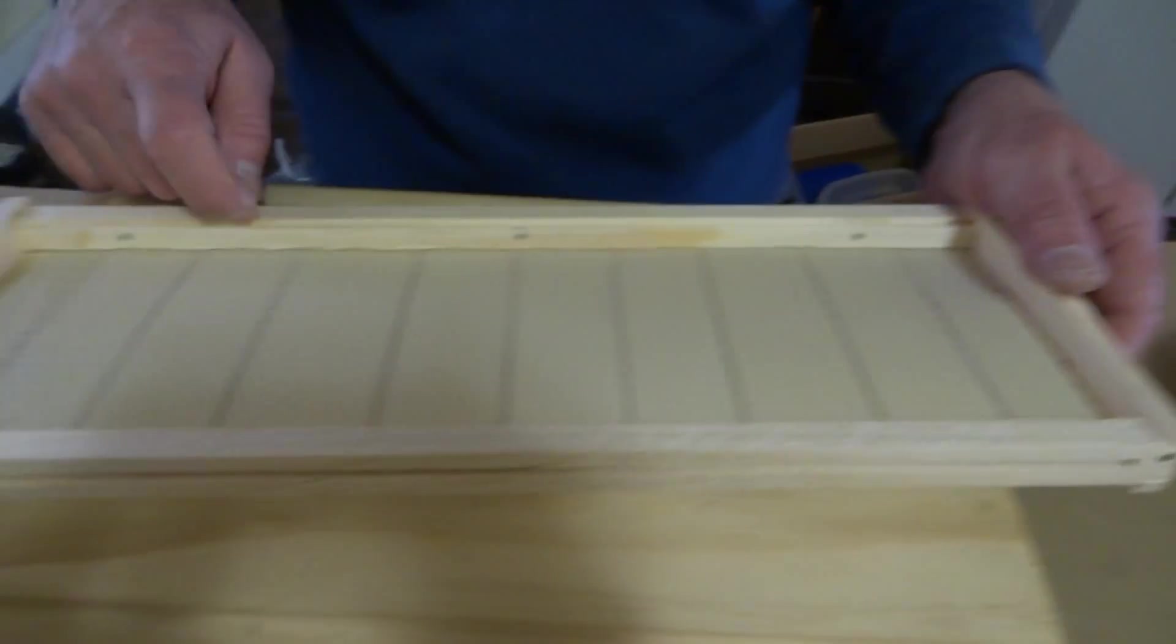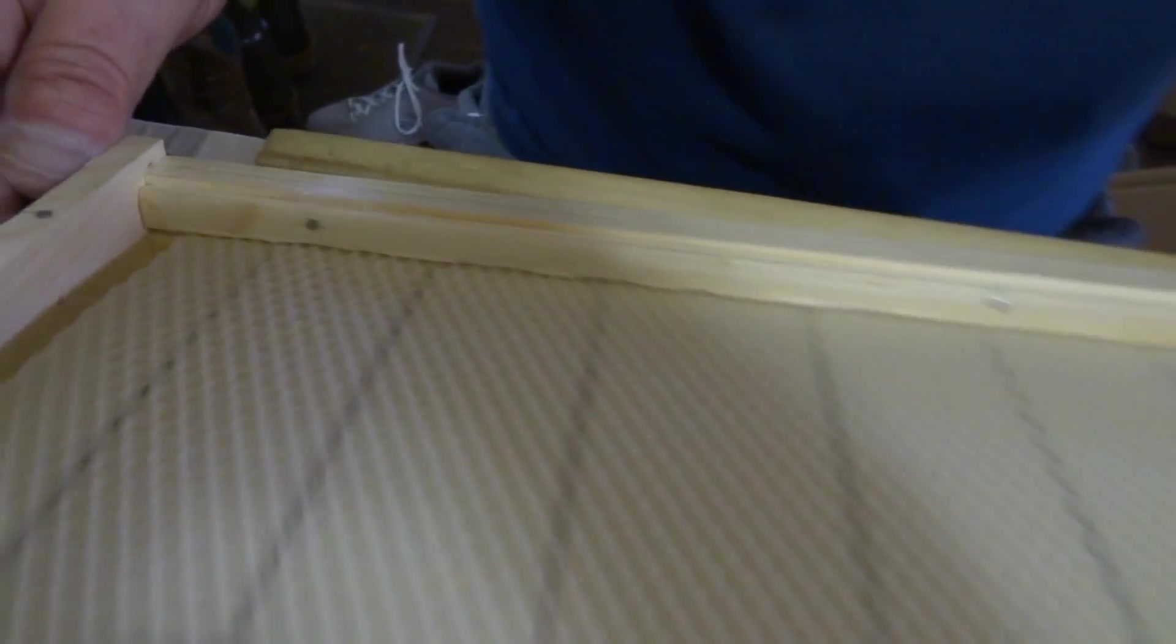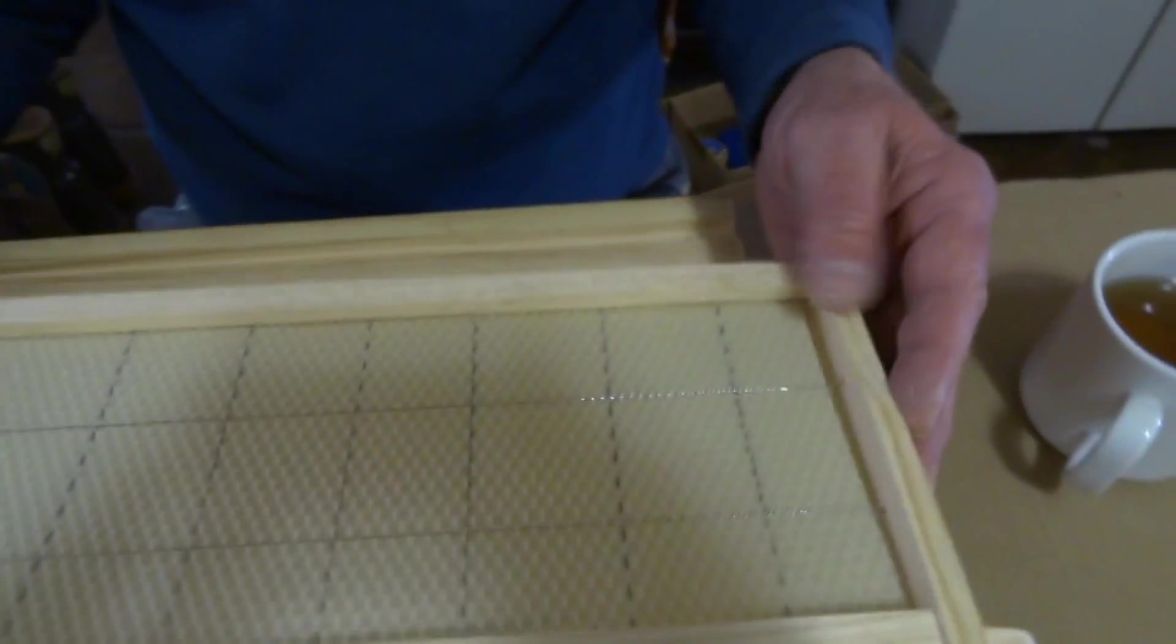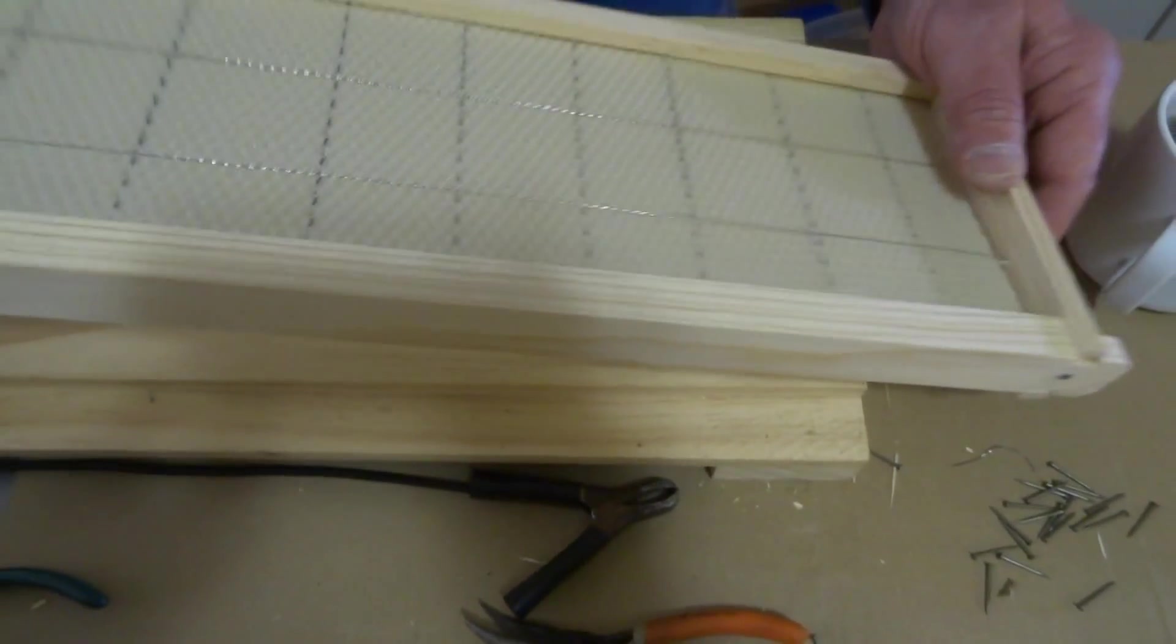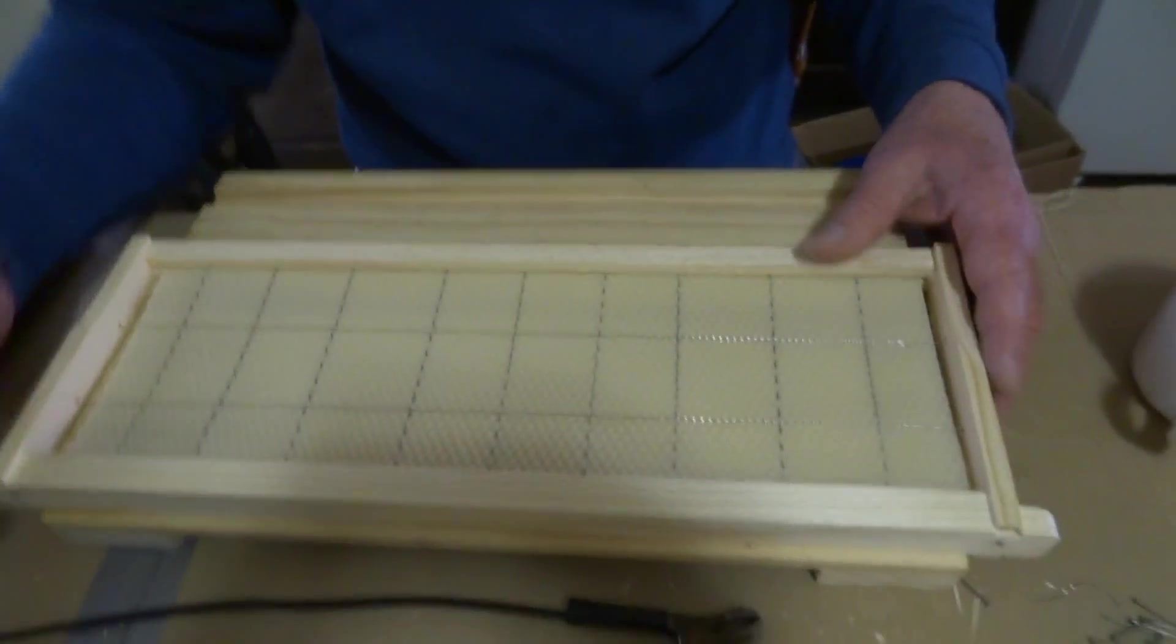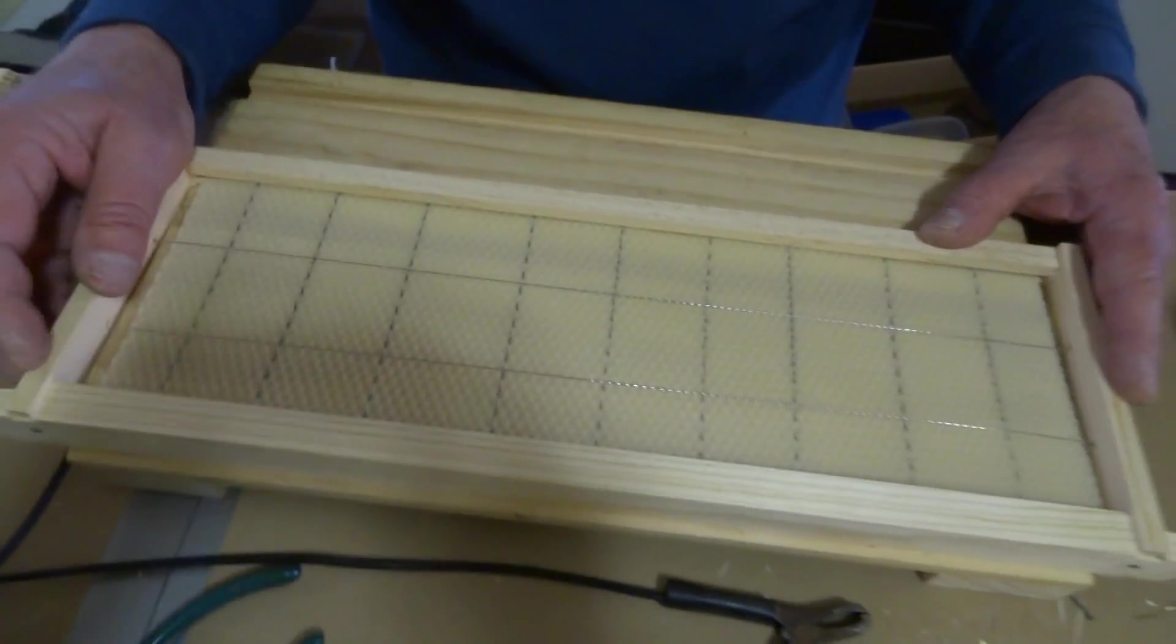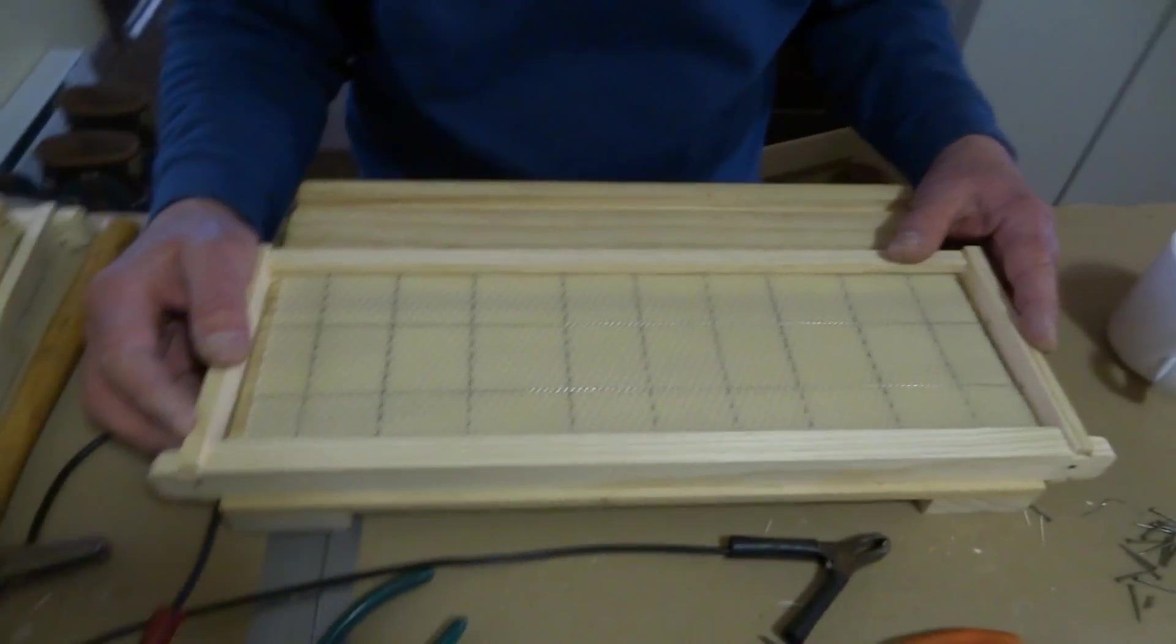And like I said, to disassemble it, you'll just stick your hive tool in here and pop these off. And the next step is to embed the wires. Now, there's two ways you can do the embedding. They sell these rollers to roll across here. And that's the physical way to embed it. I've never really used those.